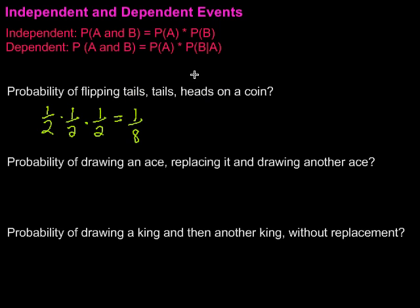Now, you might say, oh, that doesn't seem that rare. But, what about the probability of three tails in a row? Well, three tails in a row, that would be one-half times one-half times one-half, which is also equal to one-eighth.